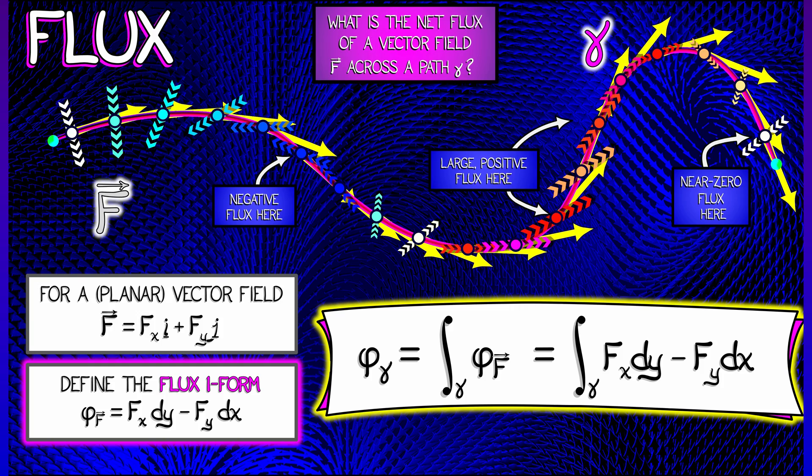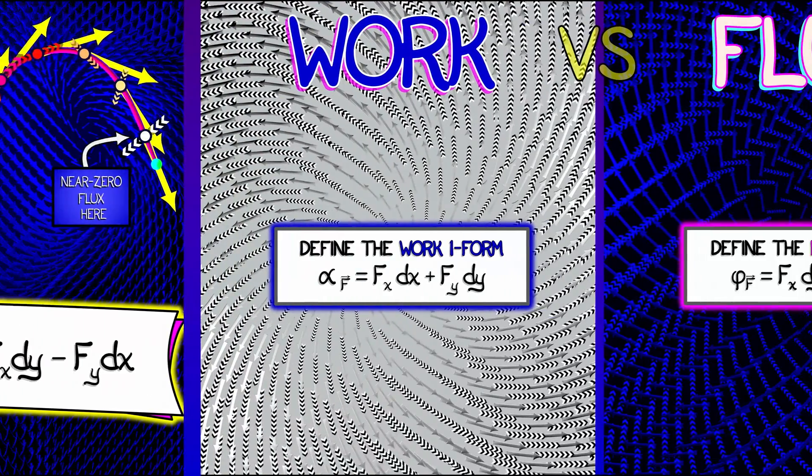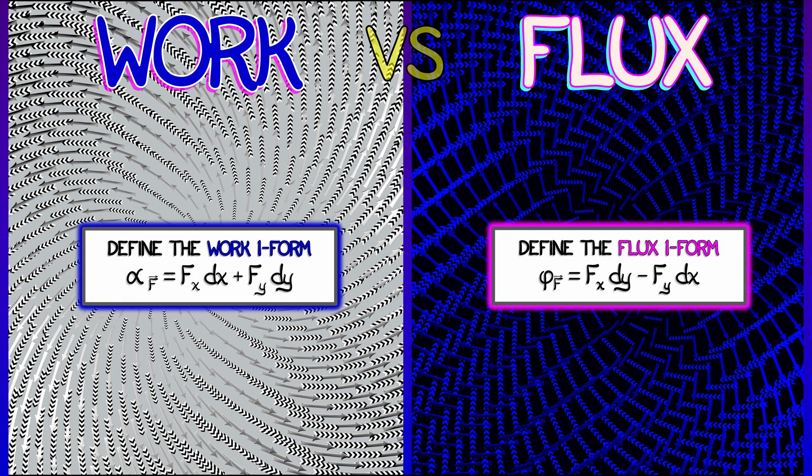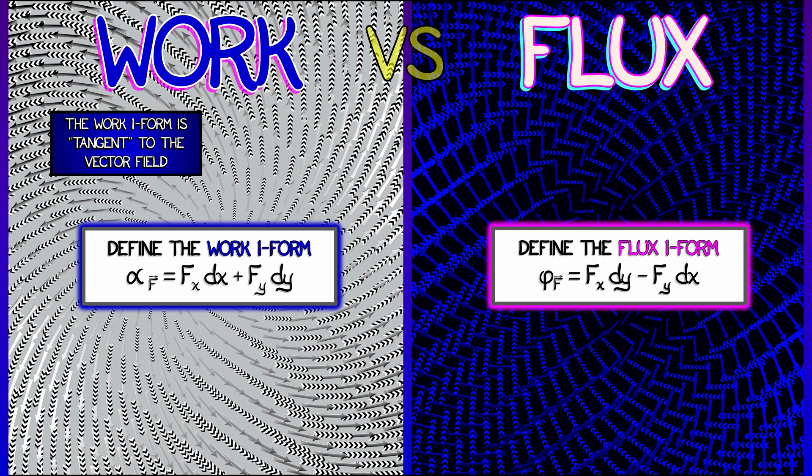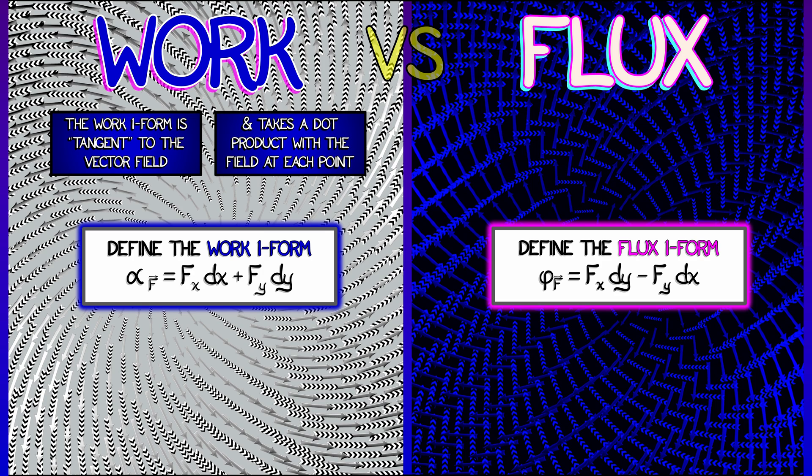Now remember, we've already seen work, and the differences between the work one-form and the flux one-form are worth contemplation. The work one-form α_f is, if you will, tangent to the vector field. It takes a dot product of the tangent vectors to your path with the vector field at every point and adds those up.